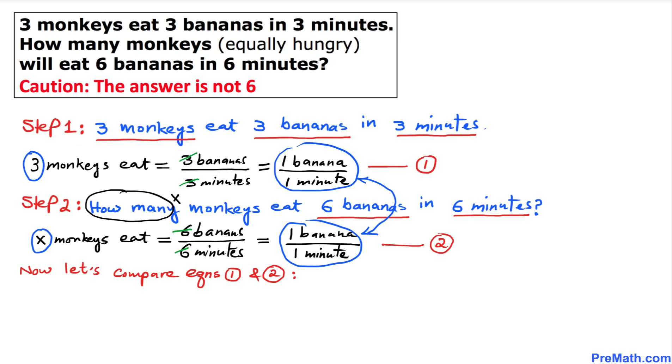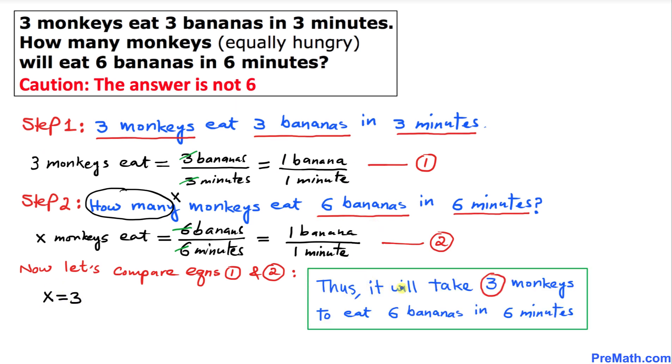So that means our answer is going to be—that means X has a value of three. Thus it will take three monkeys to eat six bananas in six minutes. Thanks for watching, and please don't forget to subscribe to my channel for more exciting videos. Bye!